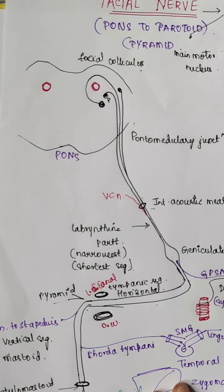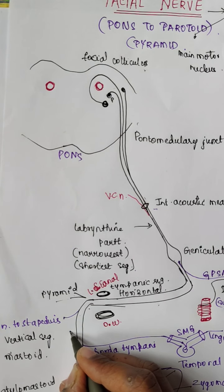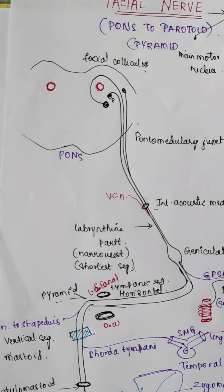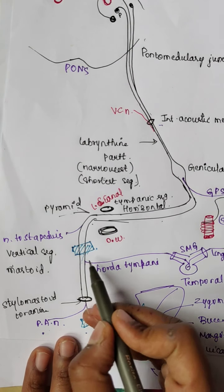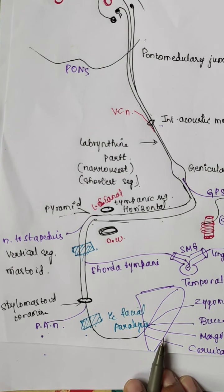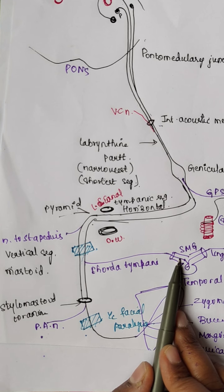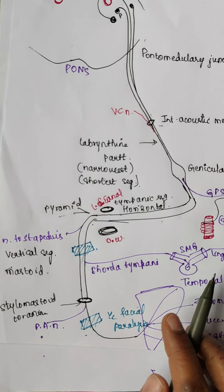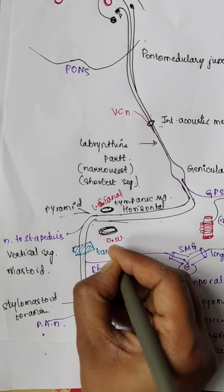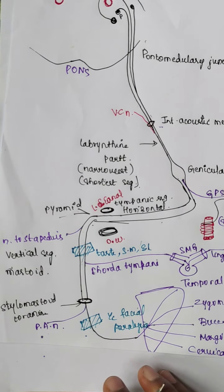Now let us imagine what will happen if the lesion is between the part of the nerve which is between the nerve to stapedius and the chorda tympani. If this is affected, along with ipsilateral facial palsy, there is also loss of taste in the anterior two-thirds of the tongue, which is the function of the chorda tympani. Also, the submandibular ganglion has lost its connection, so salivation from the submandibular and sublingual glands is lost.